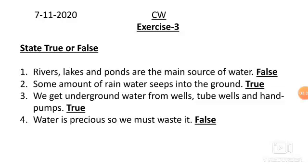Now let us continue with our exercise. Read the first sentence: 'Rivers, lakes and ponds are the main source of water.' Is the sentence correct — is it true or false? This is false, because rain is the main source of water. Rivers, lakes and ponds are other sources of water. So we are going to write: False.